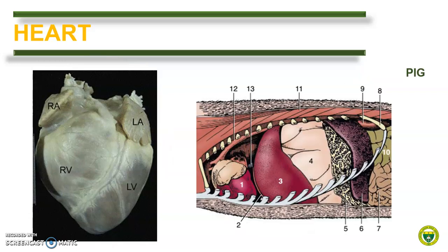The heart of a pig is relatively small, providing as little as 0.3% of the pig's total body weight. It occupies the ventral half of the thoracic cavity, extending between the second and the fifth ribs. Interestingly, in an old anatomy book, the heart of a pig is uniquely described to have a double apex.